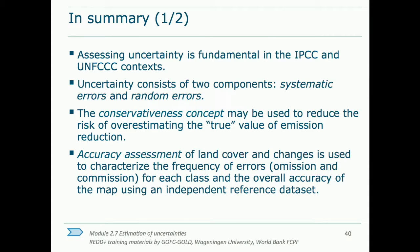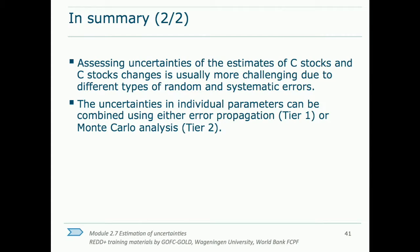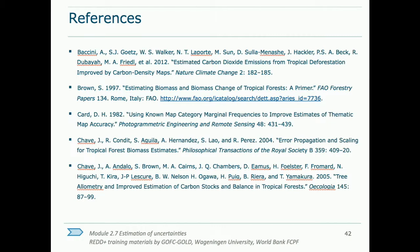In summary, while it might not be the most exciting part, assessing uncertainties is a fundamental part of the emission estimate process. It consists of both systematic and random errors. Random errors can be reduced as much as possible, and systematic errors can also be quantified and used to remove biases in the estimates. This is done for land cover and land cover change data using an accuracy assessment to characterize the frequency of errors. Uncertainties in carbon stock and stock changes are often larger and more difficult to quantify than in area change estimates, but they should be identified and quantified whenever possible. The final step is a combination of uncertainties, which can be done either through error propagation or Monte Carlo analysis.